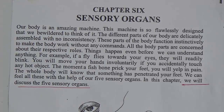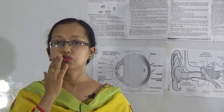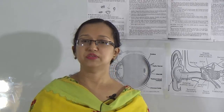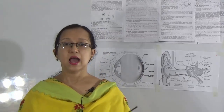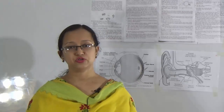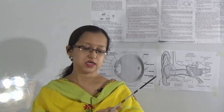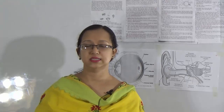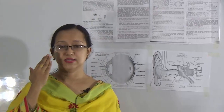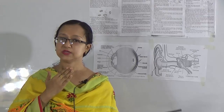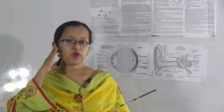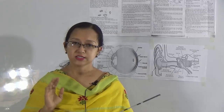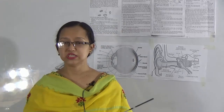We can feel all these with the help of our five sensory organs. Our body has different organs like our eyes, nose, mouth, ear, hands, and feet. All these organs have different work and they can do this work by themselves — nobody commands them. Our five sensory organs are our eyes, nose, mouth, ear, and skin. They have different functions: eyes help us see, nose helps us smell, tongue helps us taste, and ears help us hear.